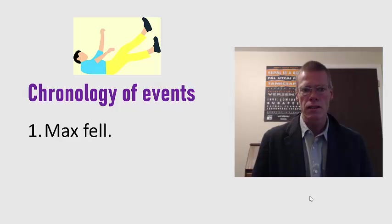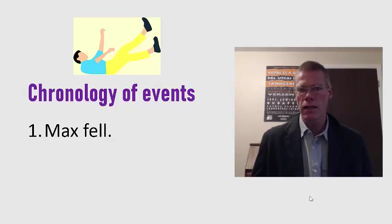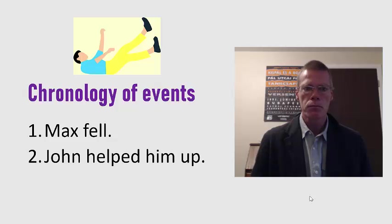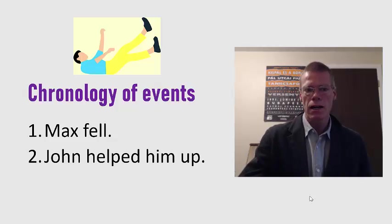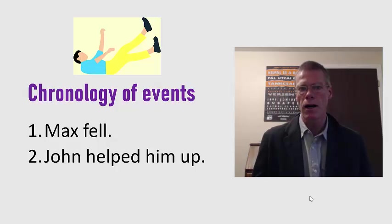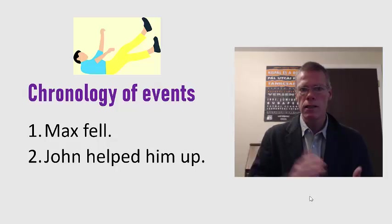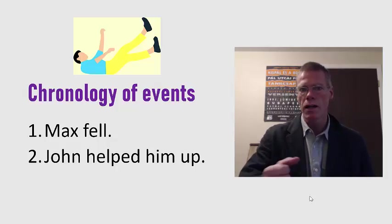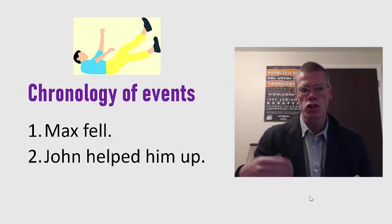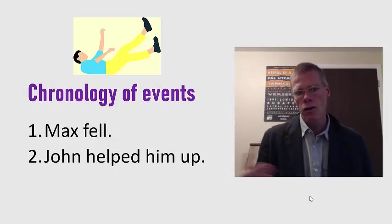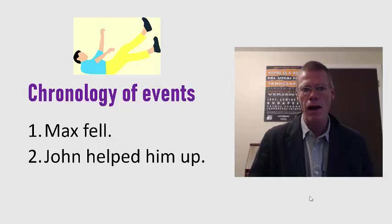We'll start with the sentence 'Max fell.' Imagine this is the beginning of a discourse. At this point, we've just described an event. But now imagine that the next utterance is 'John helped him up.' Intuitively, we understand that these things happened chronologically — Max fell, then John helped him up. In other words, John helped Max to stand up again. In this case, John is being a nice guy, helping Max up after falling.